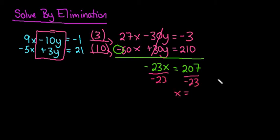And then we would simply just divide both sides by negative 23. So when I divide 207 by negative 23, I end up with x equals negative 9. And a lot of students that get to this point, they're like, oh, I've got an answer. I must be done.